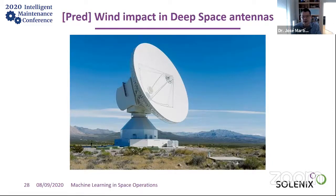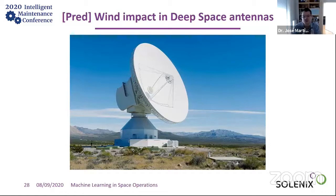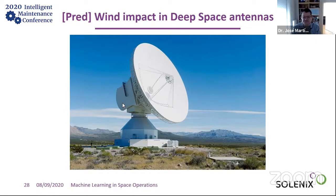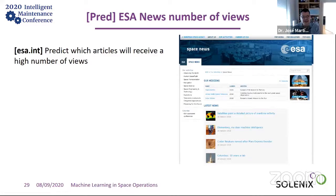Another interesting prediction problem is forecasting how wind will impact pointing of deep-space antennas. These are 35-meter dishes. In Argentina, close to the mountains, strong wind can affect pointing accuracy. For satellites as far away as Mars or Mercury, pointing must be accurate to millidegrees. By predicting how wind impacts pointing, we can compensate and maintain an uninterrupted communications link.